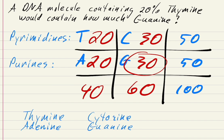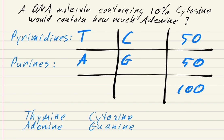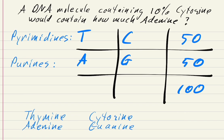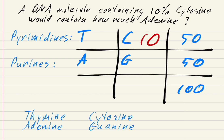Let's go through two more quick examples, because one of them is going to be trickier. First: a DNA molecule containing 10% cytosine would contain how much adenine? Here we're given cytosine and we're asked to figure out adenine. We'll put in 10% for C. Let's work counterclockwise this time. So 50 minus 10 is 40, so 40 has to go in the thymine box — there's no other number you could put there. If T is 40, A has to be 40 as well, because they pair one to one.